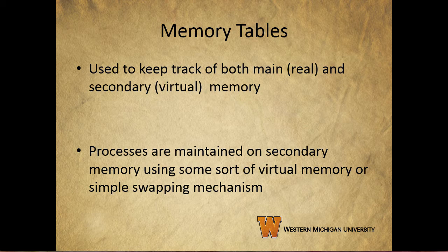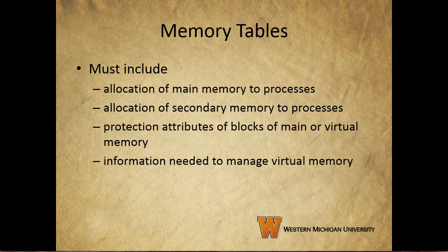Processes are maintained on secondary memory using some sort of virtual memory or a simple swapping mechanism. Memory tables must include the allocation of main memory to processes, the allocation of secondary memory to processes, protection attributes for blocks of main or virtual memory, and the information needed to manage virtual memory.